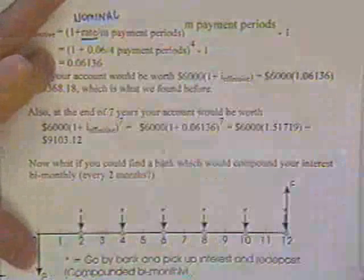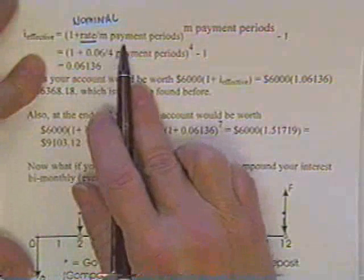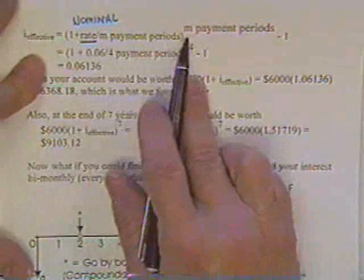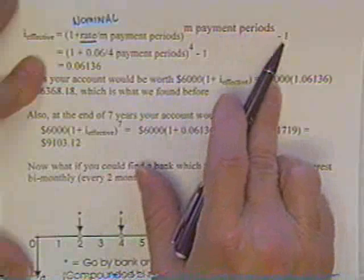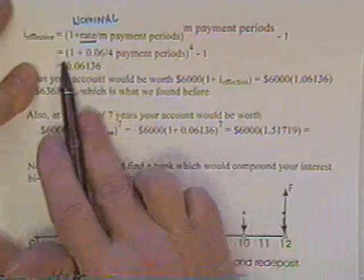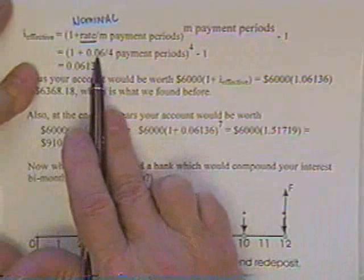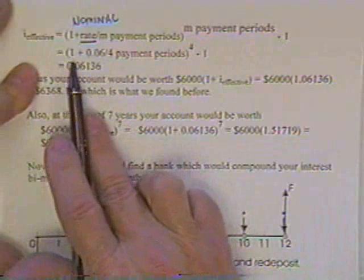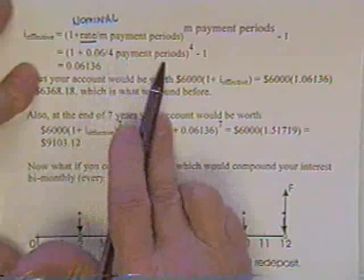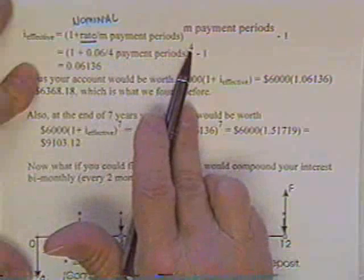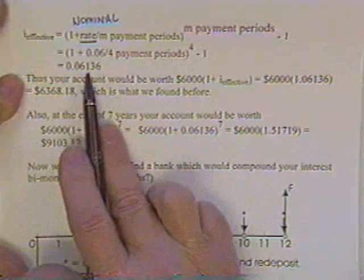The nominal rate divided by how many payment periods are going to be involved, raised to the m payment periods minus one. So in our case, the effective rate because he was willing to compound quarterly is one plus the nominal rate of 6 percent over four payment periods, raised to the four payment periods minus one.